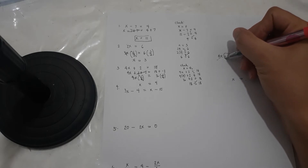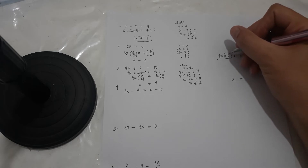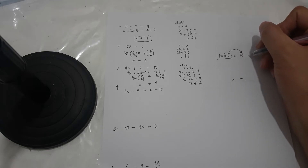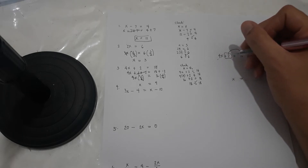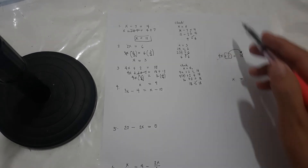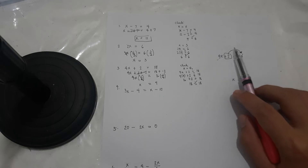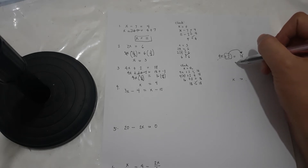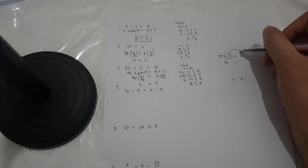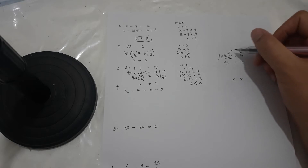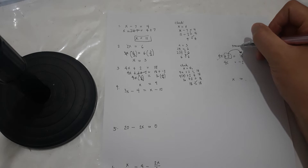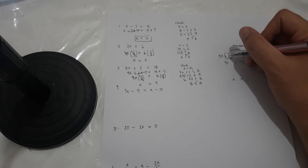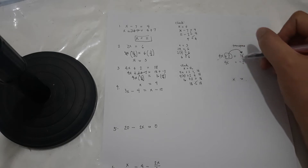So for 4x plus 2 is equal to 18: what you don't need on the left side, move it to the other side. Move the terms without x to the right side. When you transpose, the sign becomes its opposite — positive 2 becomes negative 2. So 4x is equal to 18 plus negative 2. Write it as 4x is equal to negative 2 plus 18.